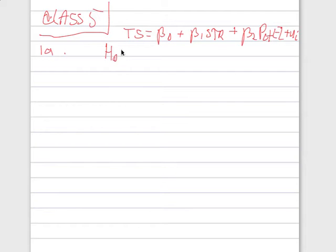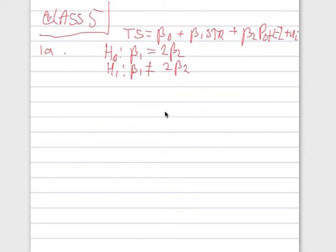Transformation of variable model. Class 5, question 1A. We are given this model: test scores equals beta 0 plus beta 1 times STR plus beta 2 times PCTEL, where STR is student-teacher ratio and PCTEL is the fraction of English language learners. We need to estimate a transformed regression so that you can use a t-statistic to test the hypothesis: beta 1 equals 2 times beta 2, alternatively two-sided it is not.